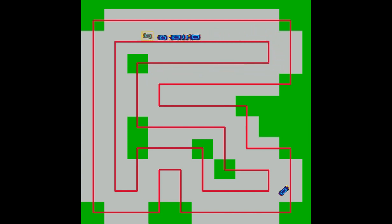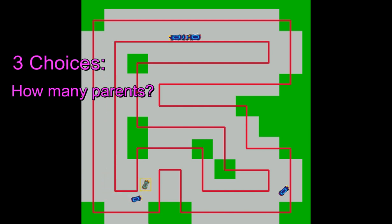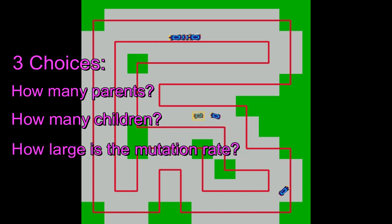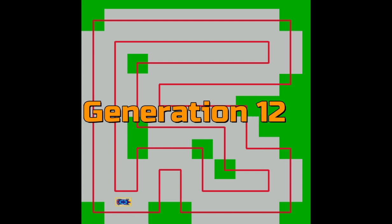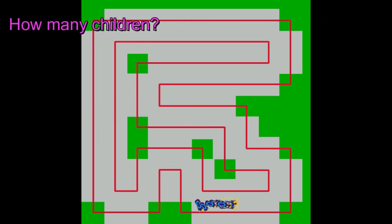When training an evolutionary algorithm, we basically need to make three choices: How many parents, how many children, and how large is the mutation rate? These three hyperparameters can be dynamically altered over the generations.